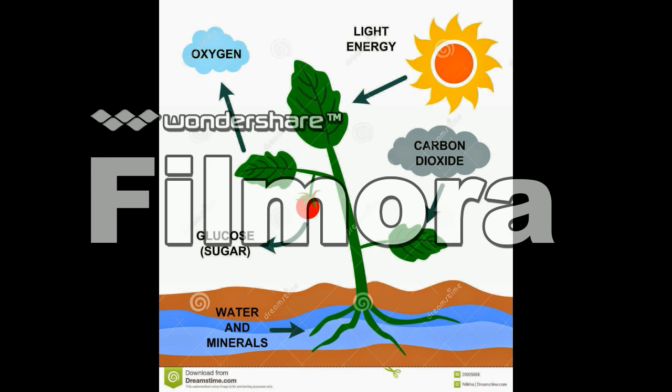The roots absorb water and minerals. Then, once they reach the leaves where photosynthesis occurs, a water molecule splits into hydrogen atoms. Oxygen is released as a byproduct, thanks to energy provided by sunlight.